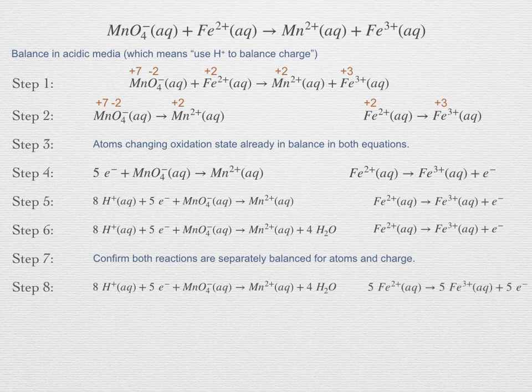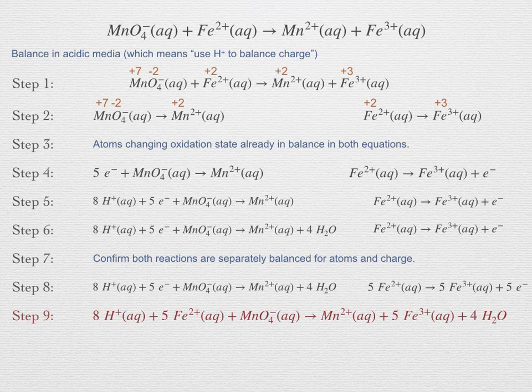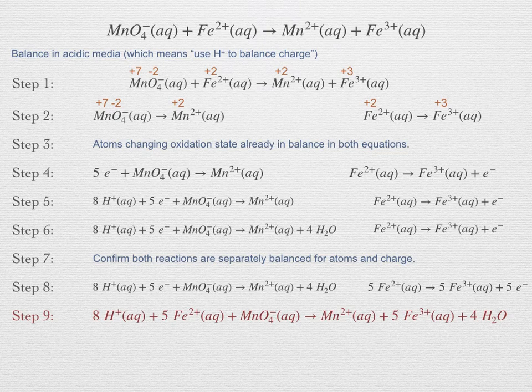Step 8: scale reactions so that they both have the same number of electrons. Multiply the iron reaction by 5 so it also has 5 electrons like the manganese reaction. Combine the half reactions, cancel electrons and anything else in excess, and bring the stoichiometry to the lowest integers. The final balanced equation is: 8H⁺ + 5Fe²⁺ + MnO₄⁻ → Mn²⁺ + 5Fe³⁺ + 4H₂O.